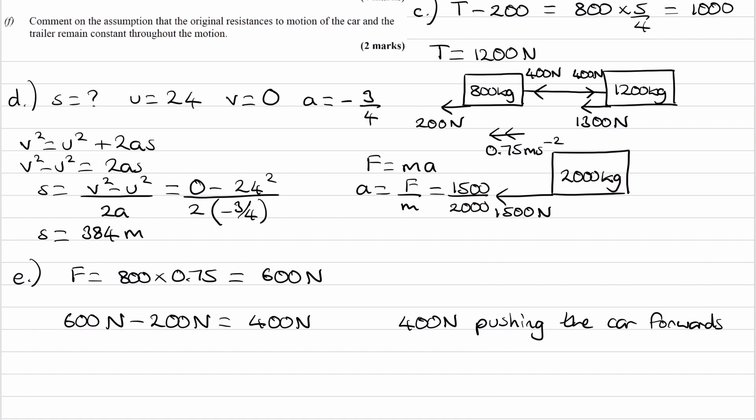Finally, for part F: comment on the assumption that the resistances to motion remain constant throughout. Resistance to motion, especially air resistance, depends on speed. So as speed varies, air resistance varies, and therefore the overall resistance to motion would vary as well. For that reason, it wouldn't be a very realistic assumption.